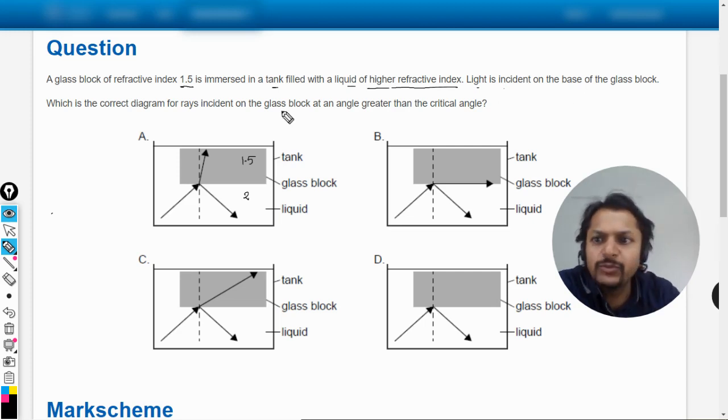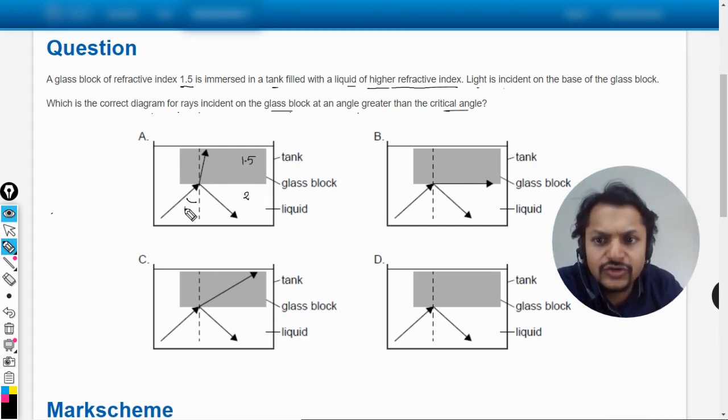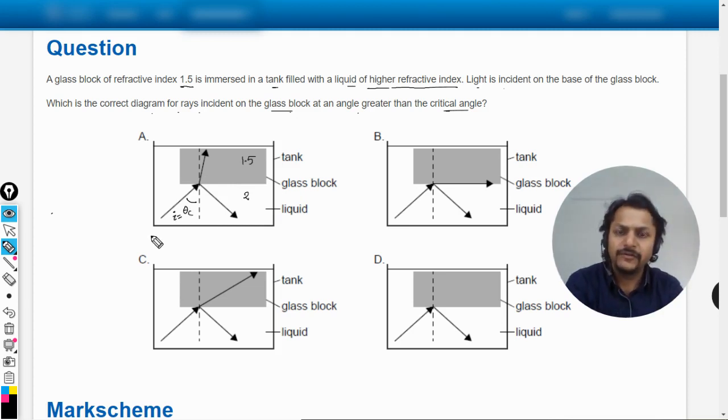Light is incident on the base of the glass block. Which is the correct diagram for the rays incident on the glass block at an angle greater than the critical angle? So this means the light is coming from the denser medium and trying to enter into rarer medium, which is a typical case for total internal reflection.